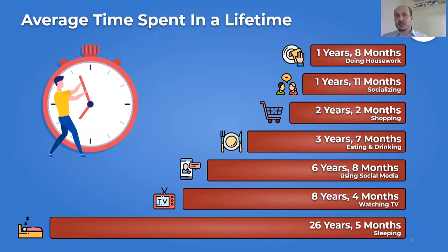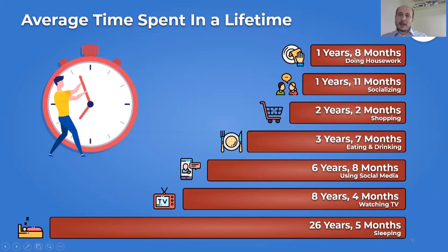Average time spent in a lifetime is interesting: an average person spends one year and eight months doing housework, around two years socializing, more than two years shopping, three years and seven months eating and drinking, and six years and eight months using social media. More than eight years are spent watching TV and more than 26 years sleeping. The time spent using social media is coming closer to TV watching time, and in a few years we may exceed it.